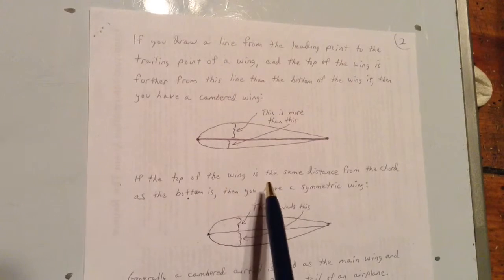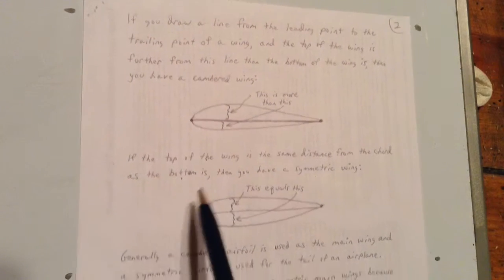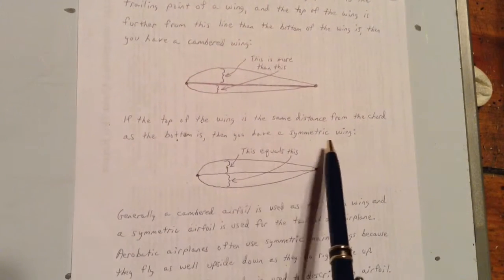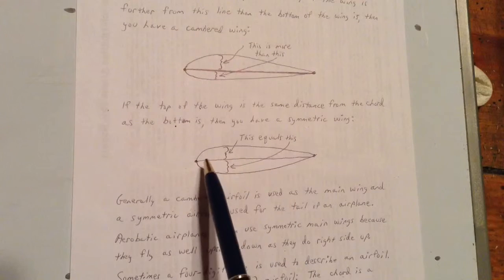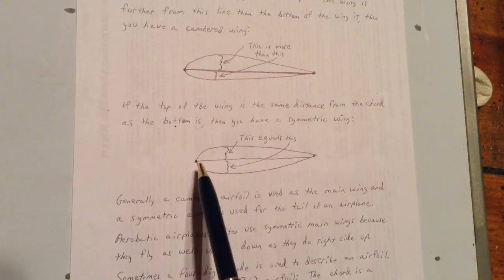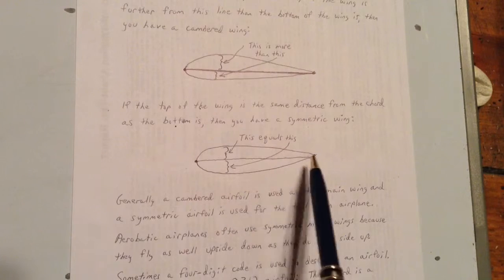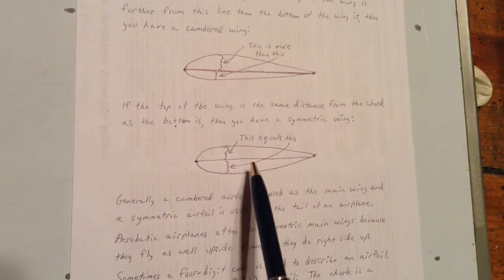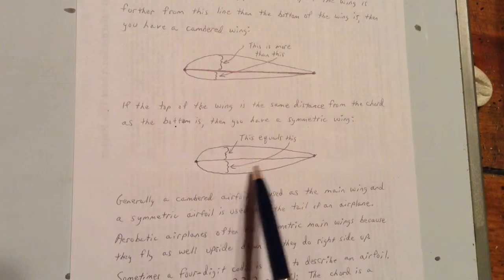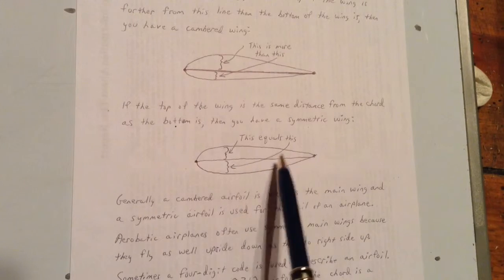If the top of the wing is the same distance from the cord as the bottom is, then you have a symmetric wing. See here? This goes up about like that. This goes down the exact same amount. The top of it is always the same distance from the middle as the bottom is. That's a symmetric wing.